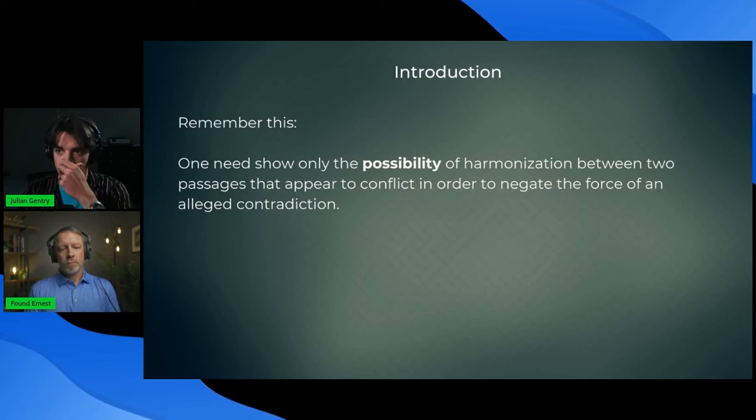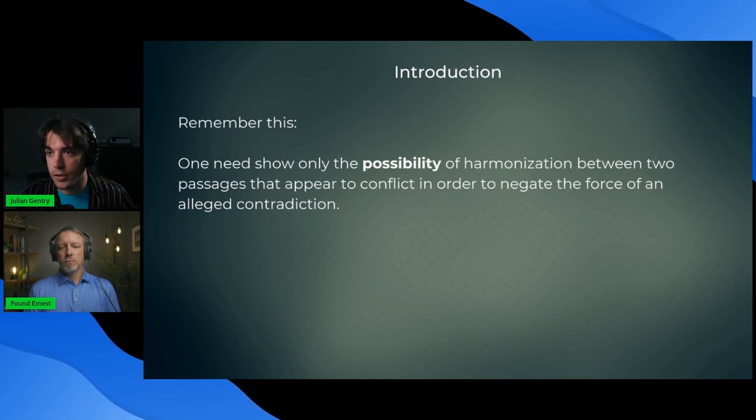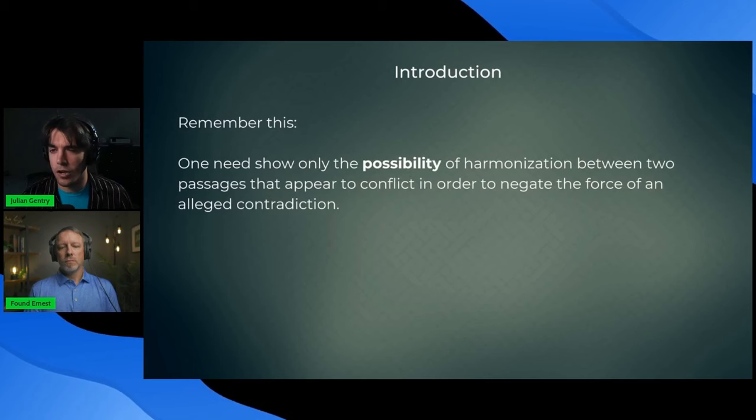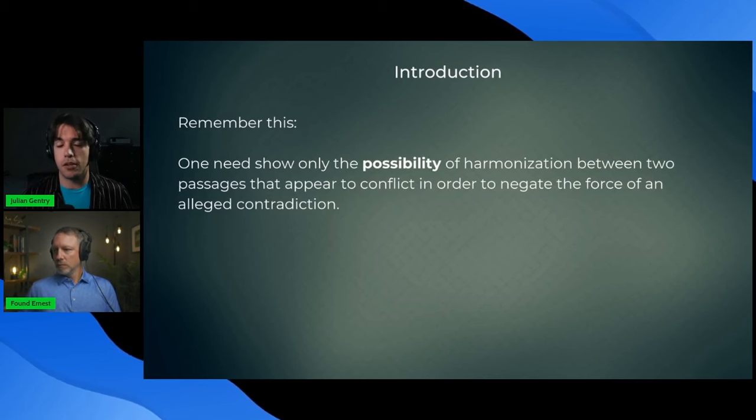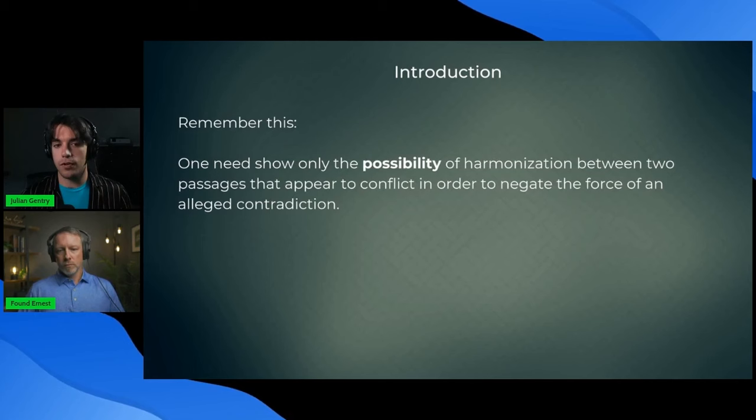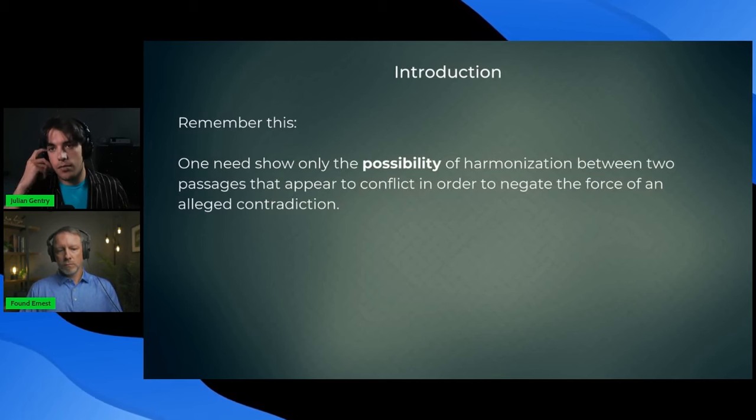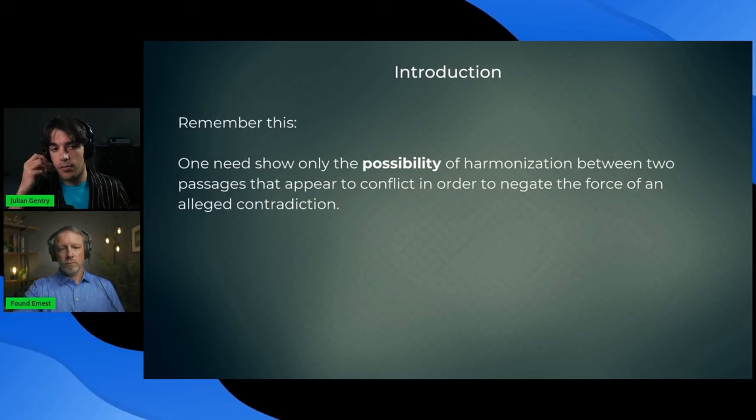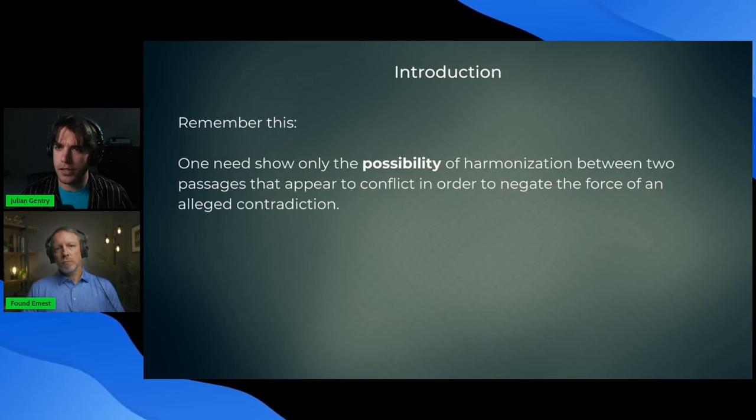And remember this. This is the most important thing. You only need to show the possibility of harmonization between two passages that appear to conflict in order to negate the force of an alleged contradiction. So, harmonization, you're going to find disagreement between scholars on this. Some people will try to harmonize every alleged contradiction and provide an exact answer for it. Like a literal answer.